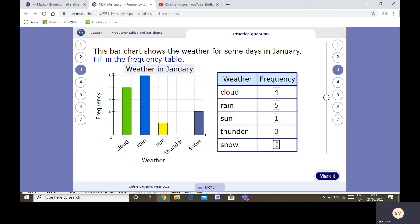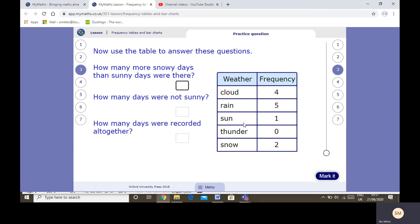And snow, it snowed 2 days. How many more snowy days were there than sunny days? So we know snowy days were 2 days, sunny days was 1 day. So the difference between 1 and 2 is easy, it's 1. How many days were not sunny? So we need to count all the numbers that are not sun. Because it was cloudy 4 days plus it was rainy 5 days which is 9. Skip the sunny day. We know there was no thunder. And snow was on 2 days so that would be 11.